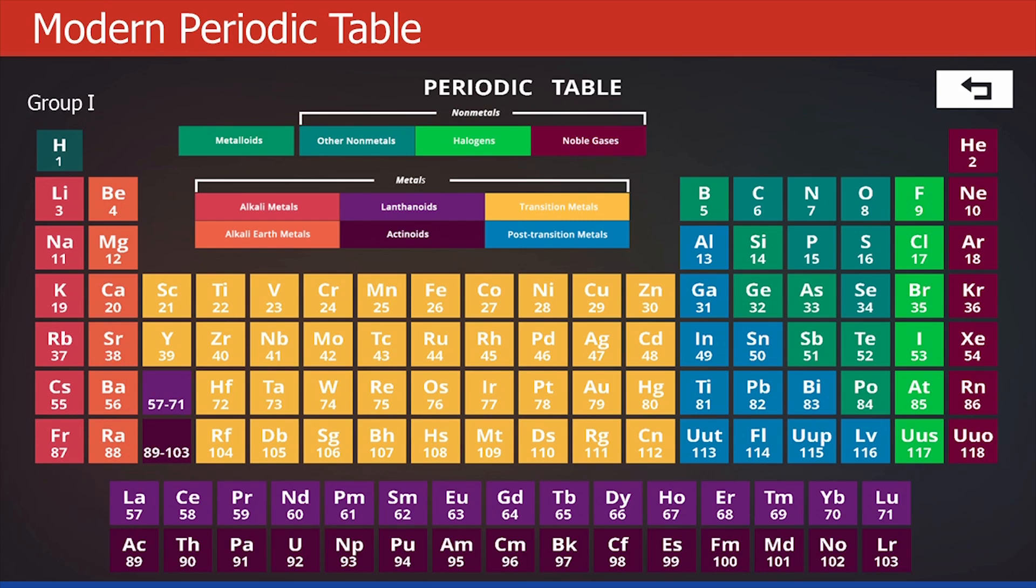Here, other than hydrogen, all other elements, lithium, sodium, potassium, rubidium, cesium and francium, they are all metals and they are commonly called as alkali metals.